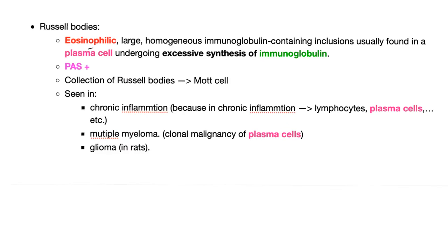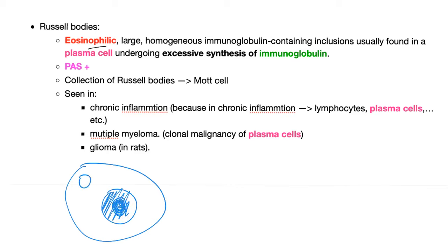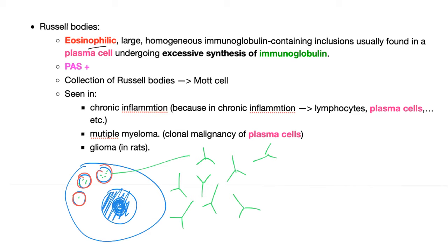Russell bodies are eosinophilic, large, homogenous, immunoglobulin-containing inclusions usually found in plasma cells undergoing excess synthesis of immunoglobulin. So let's draw a plasma cell — this is the nucleus and this is the nucleolus. These are cytoplasmic inclusions called Russell bodies. They are eosinophilic, and they contain immunoglobulins, which form the antibodies — because plasma cells secrete antibodies. That's how the naive B-cell stops being naive and starts maturing, producing those immunoglobulins, which are found in inclusion bodies called Russell bodies.